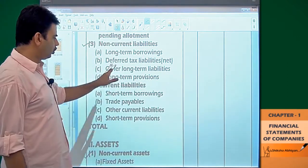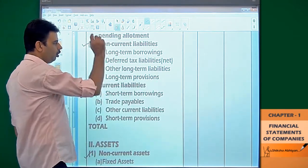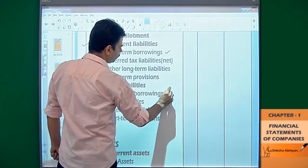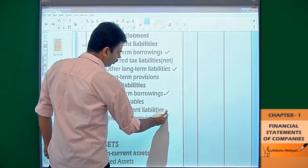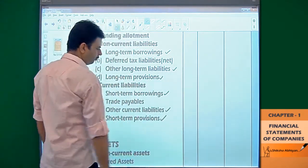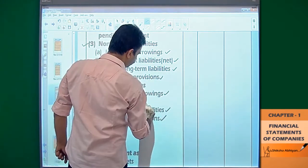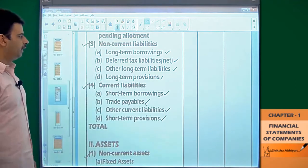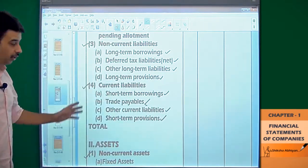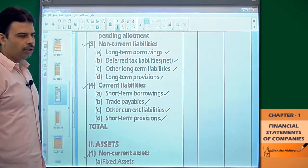Right now I'm not discussing deferred tax in detail — I'm focusing on the format. So long term borrowings, short term borrowings, other long term liabilities, other current liabilities, long term provisions, deferred tax, and trade payables — this is how you remember what goes under non-current and what goes under current liabilities. We will discuss in detail what comes under trade payables and other sub-items.